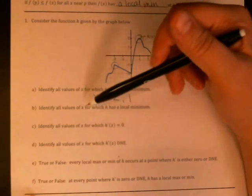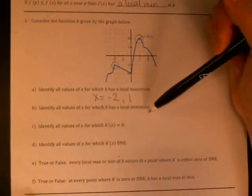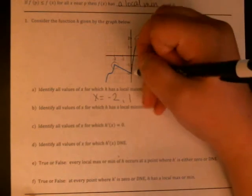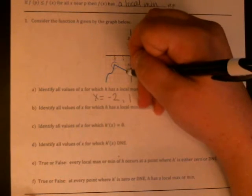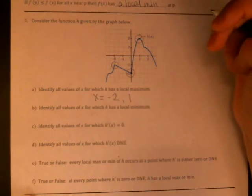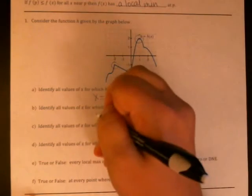Okay so identify all values of x for which h has a local minimum. So we want to be able to draw a circle around the point so that nothing is smaller and I'm seeing that right here. If I center a circle around that point none of the y values in my circle are smaller than that one so this is at x equals zero.